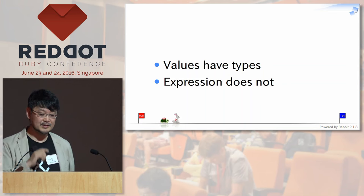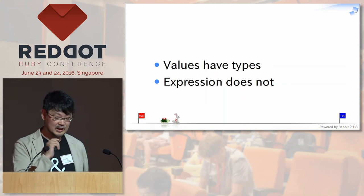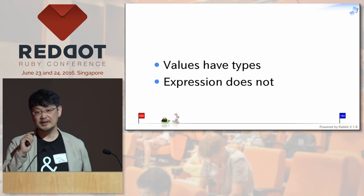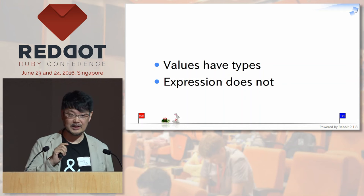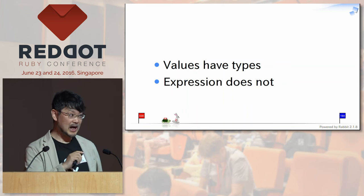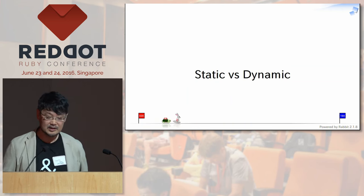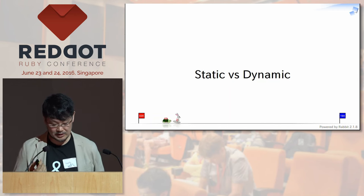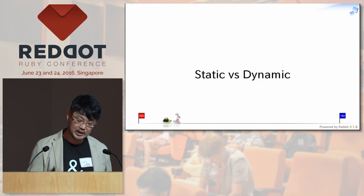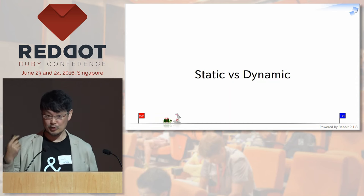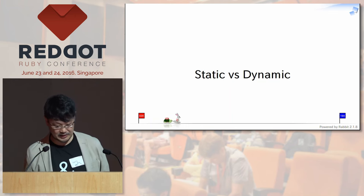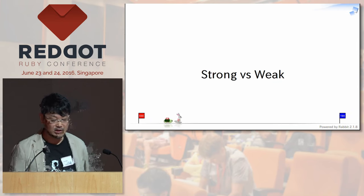Dynamic type means the values have types, but expressions or variables do not have types. That is dynamic typing. In describing the type system, we have two-dimensional aspects: static versus dynamic. Examples of static type languages are Java, Scala, Haskell, or OCaml. Ruby, Smalltalk, Python, Lisp, and other programming languages are dynamically typed. The other aspect is strong versus weak.